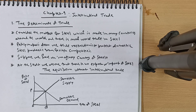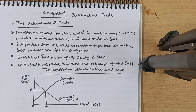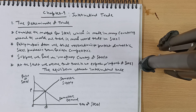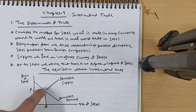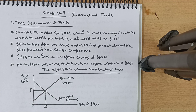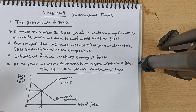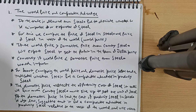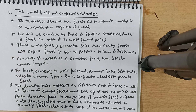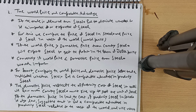Suppose we have an imaginary country of Steelo. At the start, we assume there is no export or import of steel — no international trade with the world. In that case, domestic demand and domestic supply of steel will decide the equilibrium price and equilibrium quantity. Now, world price and comparative advantage — this concept is very important; you can also watch my Semester 5 international economics videos for more detail.